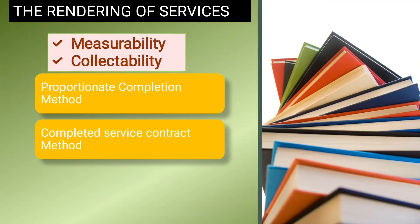Next is revenue from rendering of services. There are two methods to recognize revenue. The first is the proportionate completion method, and the second is the completed service contract method.